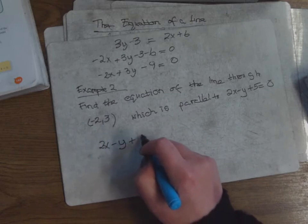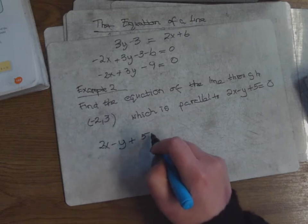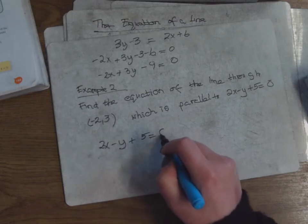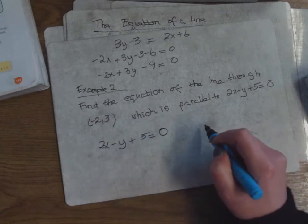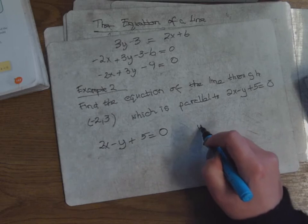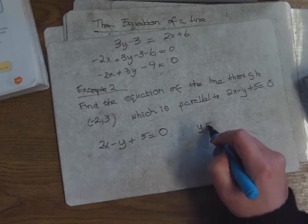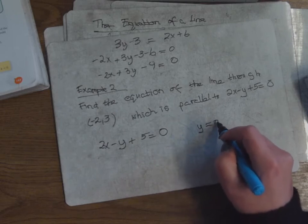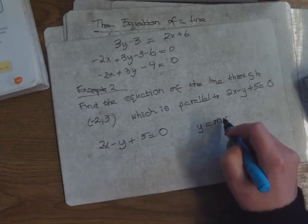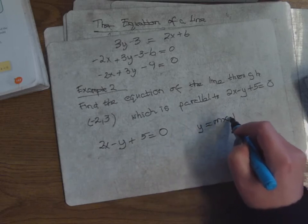You rearrange it so that y = mx + c — rearrange it so you have y equals the x term plus the number.